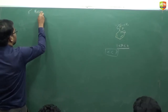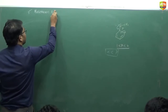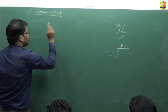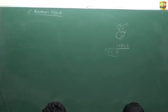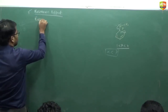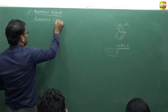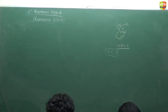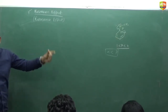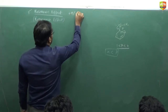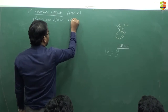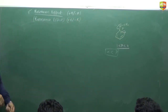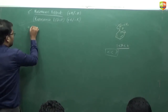The next application is the mesomeric effect — the second electronic effect. Resonance is also an electronic effect. After the inductive effect, we have the mesomeric effect, also called the resonance effect. Both are the same thing. Like inductive effect has plus I and minus I, here we also have plus M and minus M. Plus M is also written as plus R, and minus M as minus R.